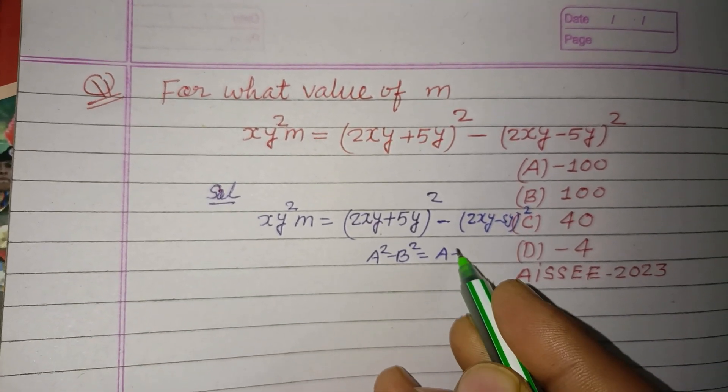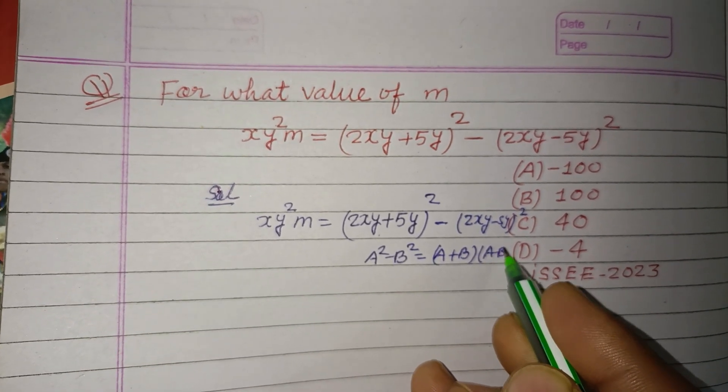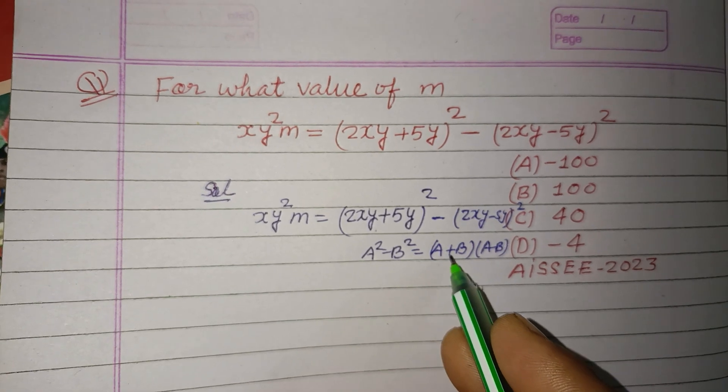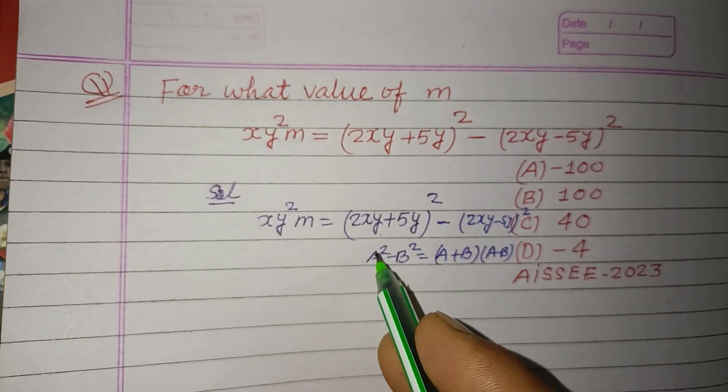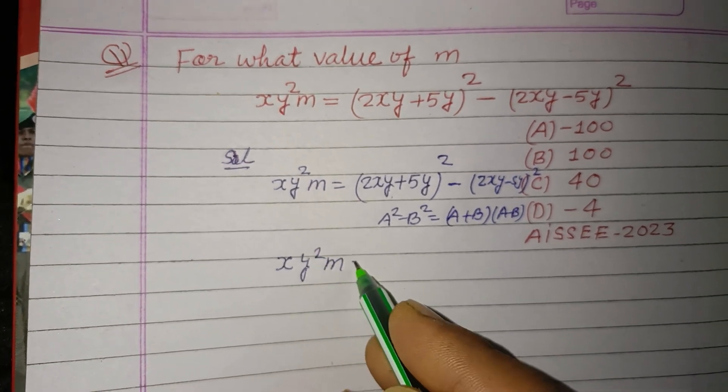Which is a plus b into a minus b. So a plus b, a minus b, we use this. x y square m equals...